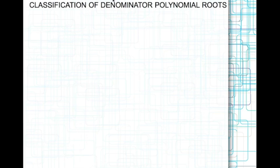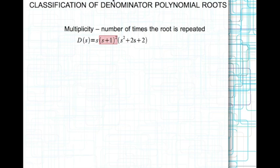The first step in doing a partial fraction expansion is the classification of the denominator polynomial roots. Let's first talk about the multiplicity of roots. Multiplicity is the number of times the root is repeated. For example, in this denominator polynomial, s plus 1 is repeated twice — it is squared — so there are two roots at minus 1. Therefore the multiplicity of the root minus 1 is 2. For the root 0 associated with s, the multiplicity is 1.